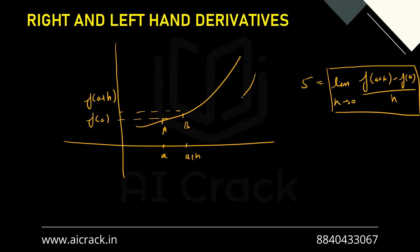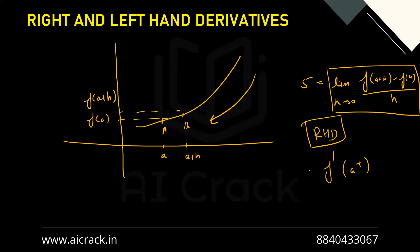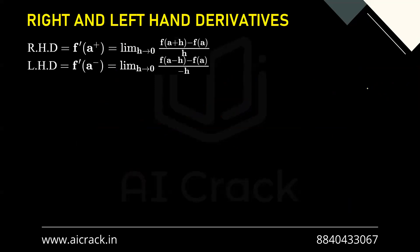An important point: we approached from the right side, moving point B from the right toward A. This is called the right-hand derivative, written as f'(a+). Similarly, if point B was on the left side, that gives us the left-hand derivative, f'(a−). The right-hand derivative formula is: f'(a+) = limit h→0 of [f(a+h) − f(a)] / h. The left-hand derivative uses −h accordingly.